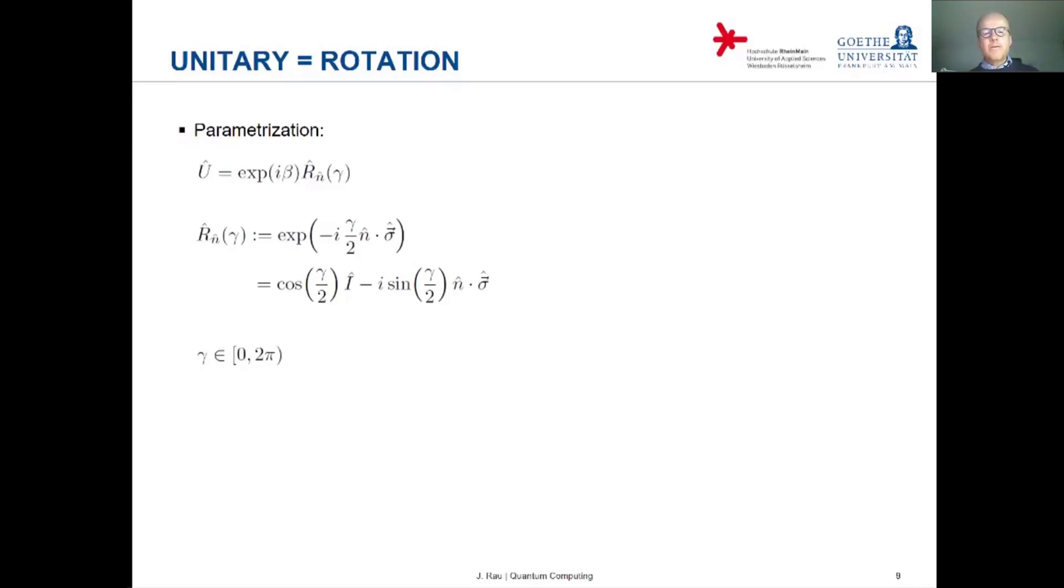The gamma is an arbitrary angle between zero and two pi. The vector n, as I said, is a three-dimensional real vector in three-dimensional real vector space. It's normalized of length one, and the sigma is also a vector with three components, and the components are themselves observables. So these are the Pauli observables x, y, and z.